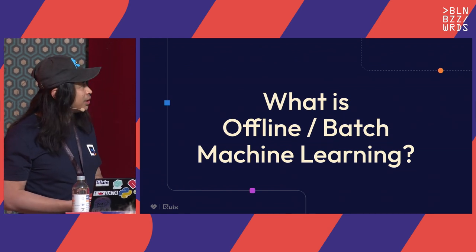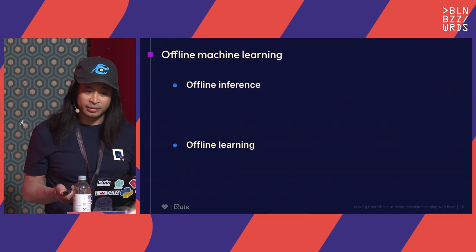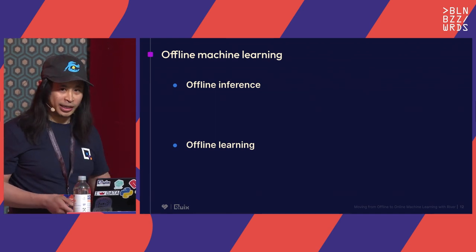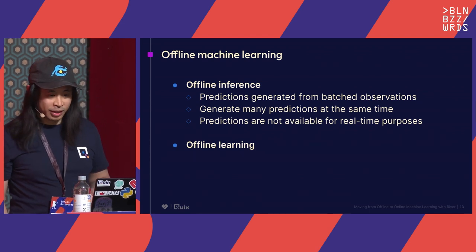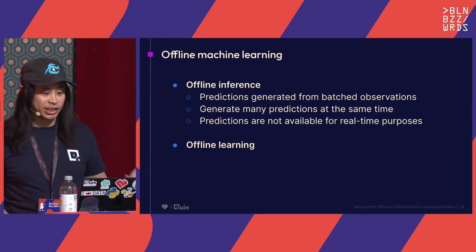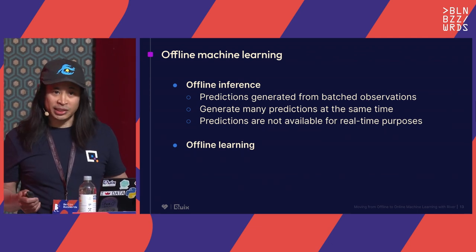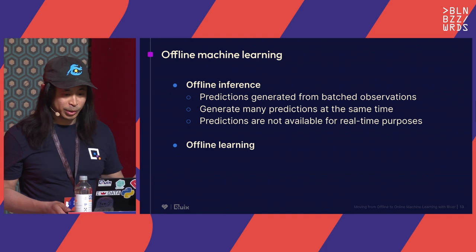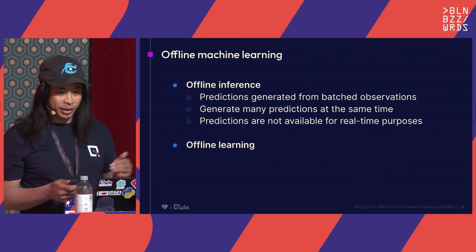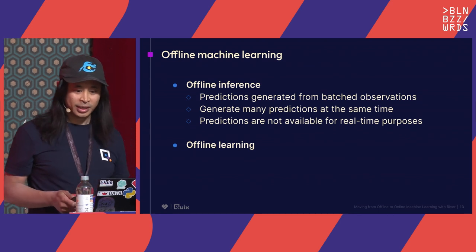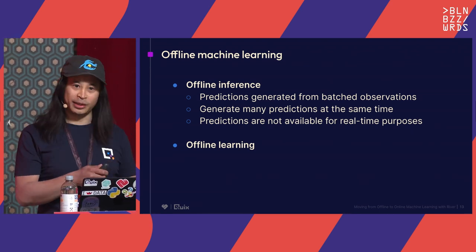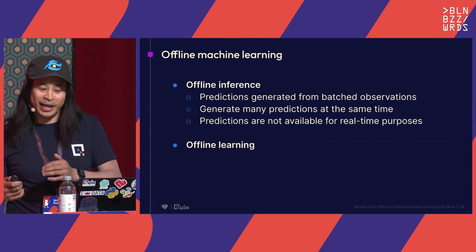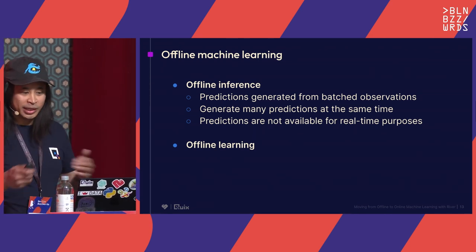With that background, let's go into what is offline, also known as batch machine learning — broken into two sections. First, offline inference: predictions are generated from batched observations, many predictions at the same time, and they're not available for real-time purposes. An example is when I worked in recommender systems: we used Spark to pre-generate recommendations for the whole user base, put them into a data store behind an API, and a scheduled job would read from that API and send emails with the recommendations to all users.